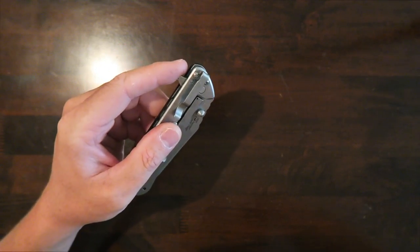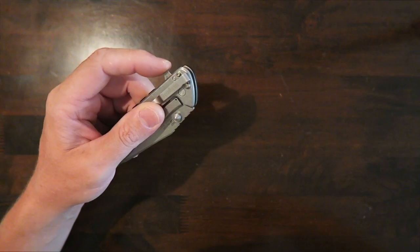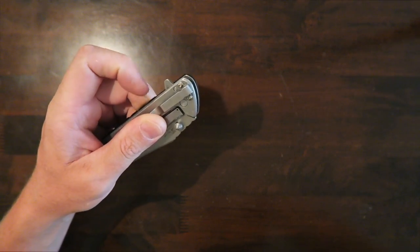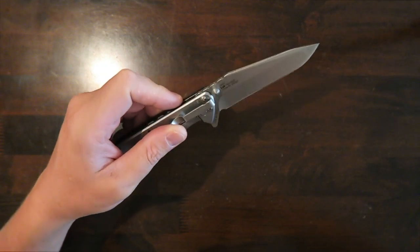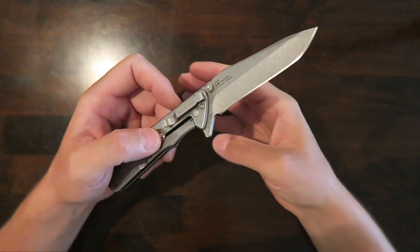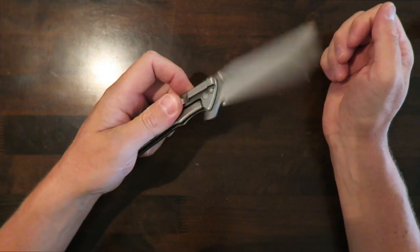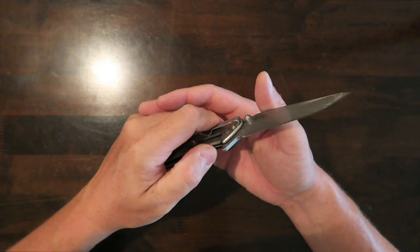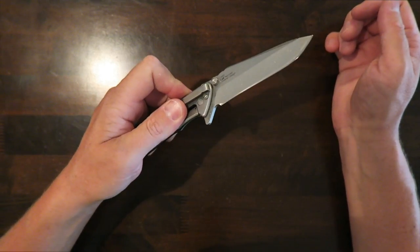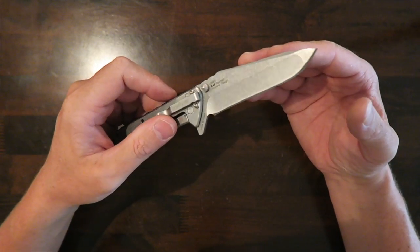So it's got the SpeedSafe flipper opener. You basically just flip this down. You don't press it. You do have to light switch it, but it flies out of there and that flipper makes it very easy to open the knife. You basically pull it out of your pocket and just flip the SpeedSafe flipper there and out she comes.